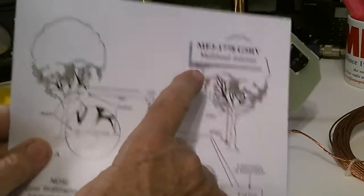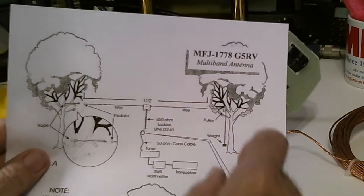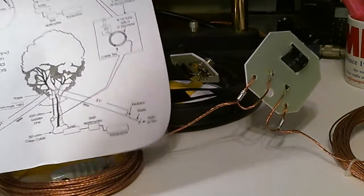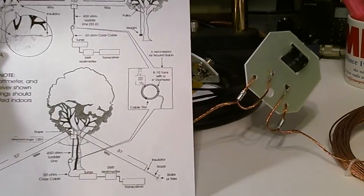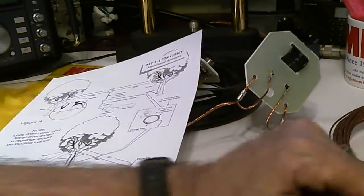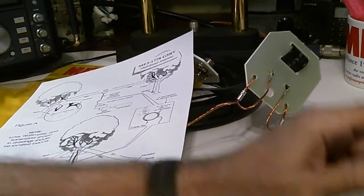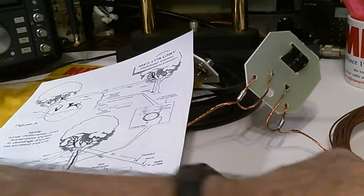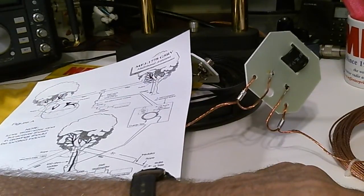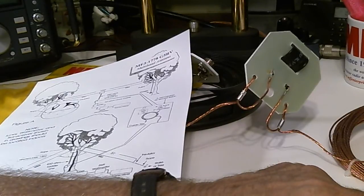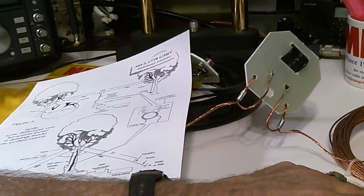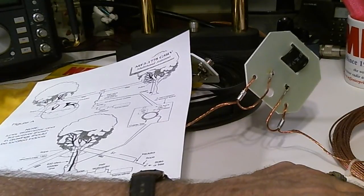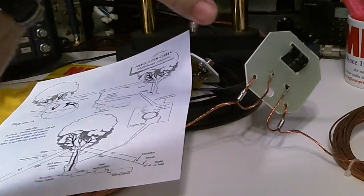The MFJ number is MFJ1778, and it's the G5RV. This is the full-size one. They make a smaller one. I should have looked that up and I forgot. Let's stand by for a second, I'll look it up for you. The miracle of the internet. 1778, here we go.